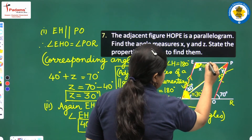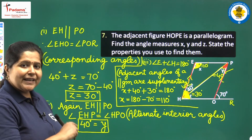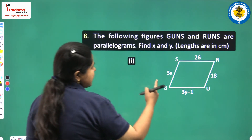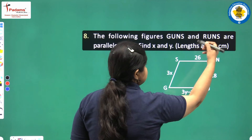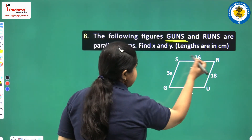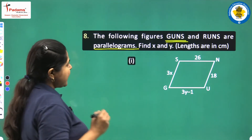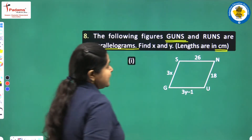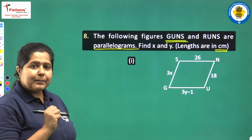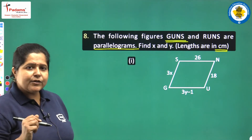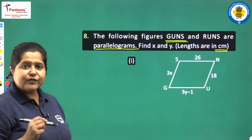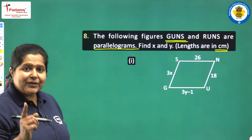We move on to question number 8. We have parallelogram GUNS. Find X and Y given the lengths are in centimetres. The angles are not given here, so we apply the property of sides of a parallelogram — opposite sides are equal.